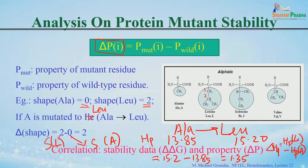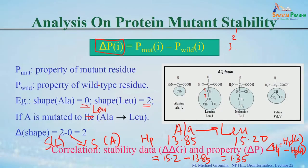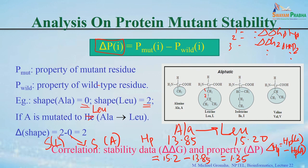If you have 100 mutants, take any particular property — for example hydrophobicity. For the 100 mutants you can calculate delta Hp and you have 100 corresponding delta G values. You can then take the correlation between the property values and the free energy values. This will tell you whether this property is related to stability or not.